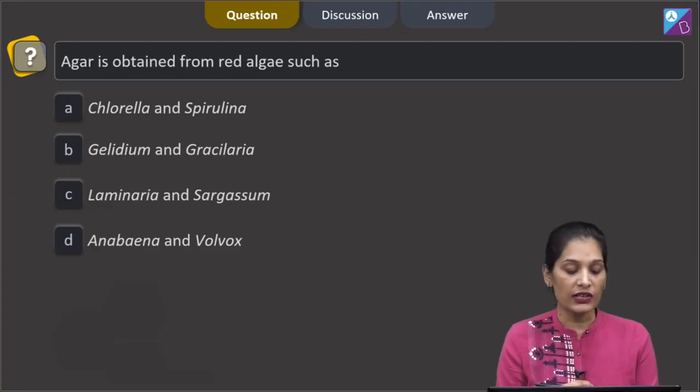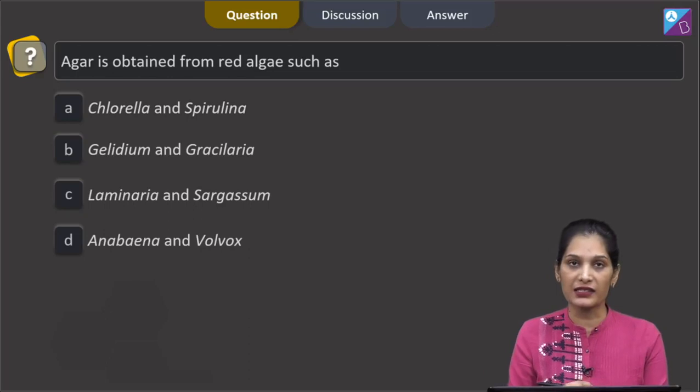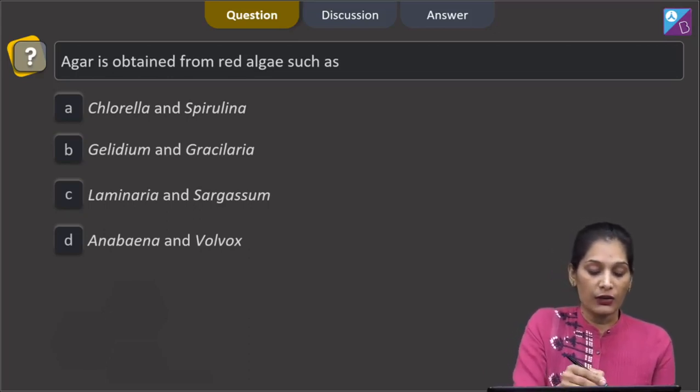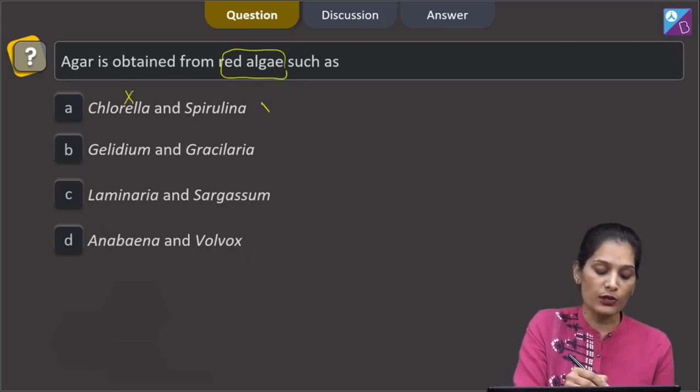This question says agar is obtained from red algae such as chlorella and spirulina. We have to find out the red algae. Chlorella is a green alga, so this option is ruled out.